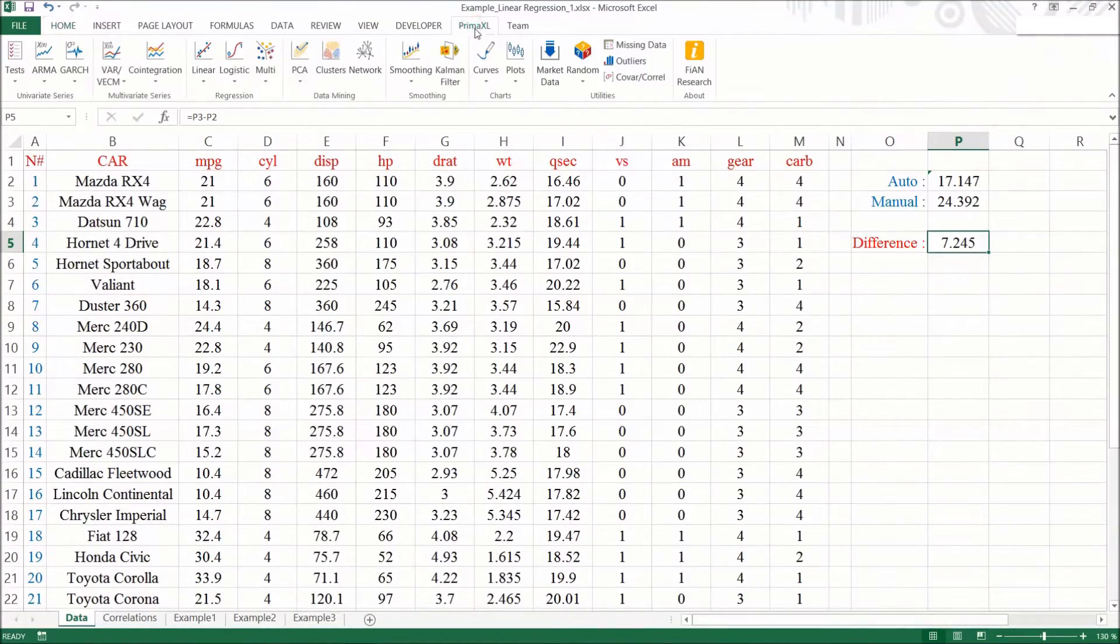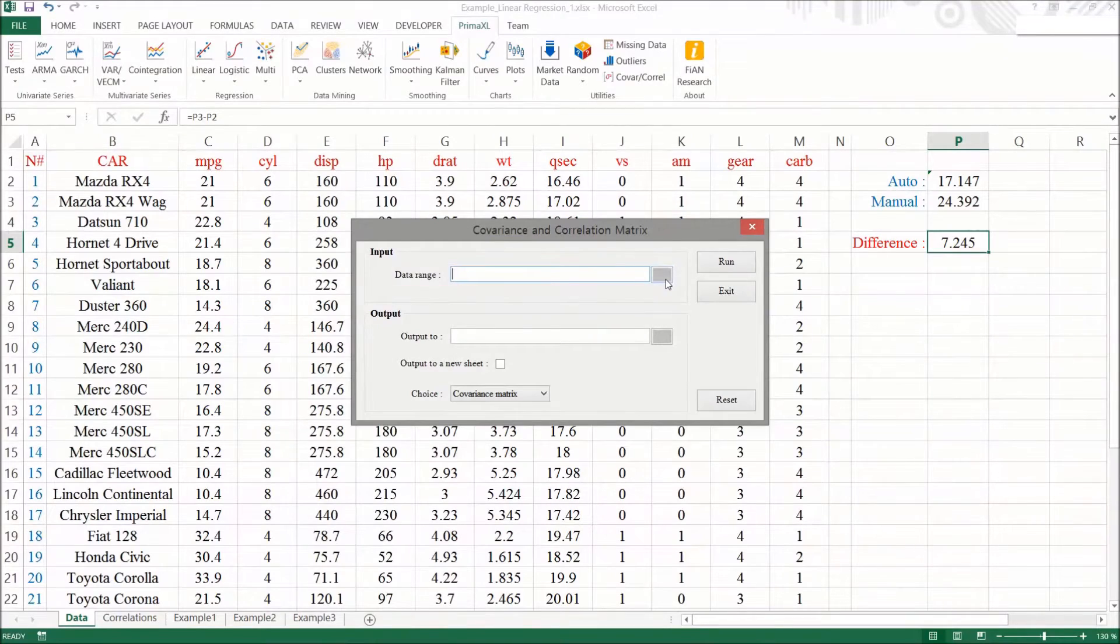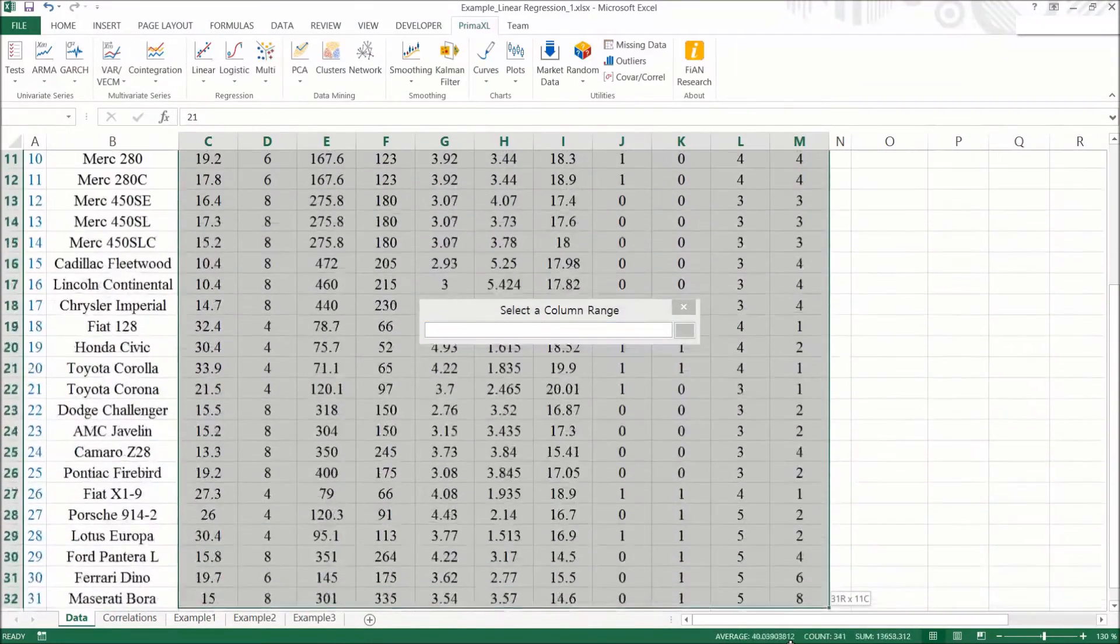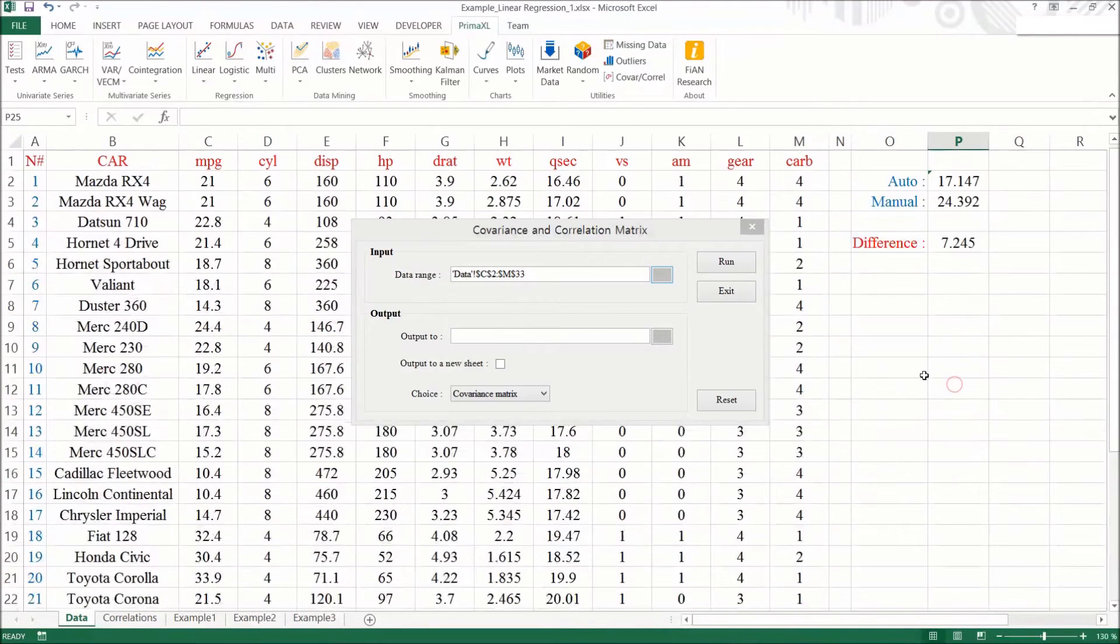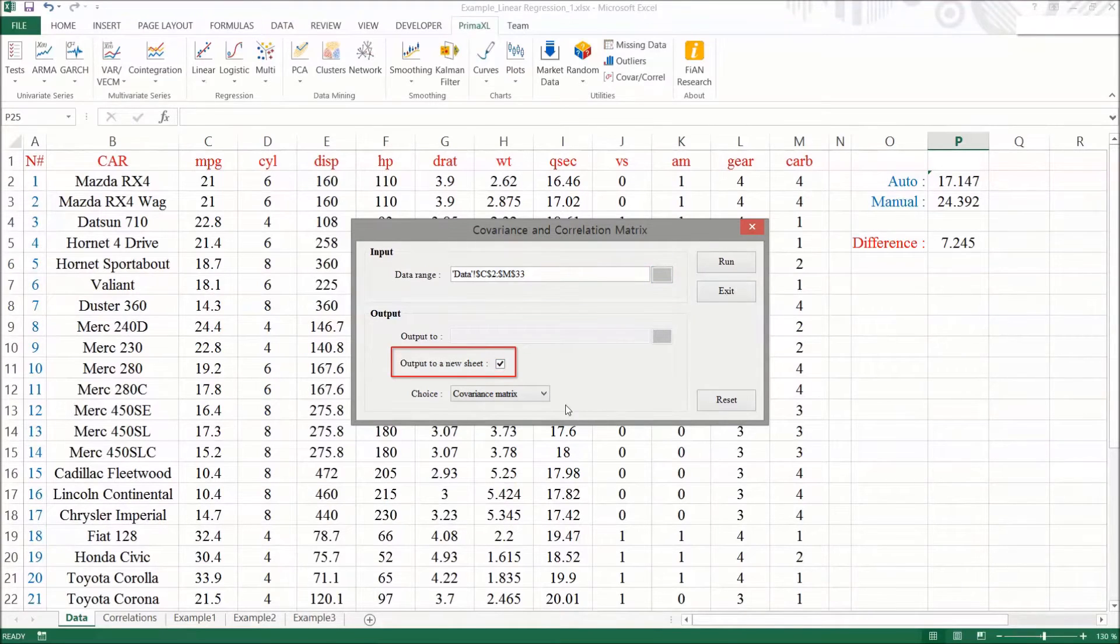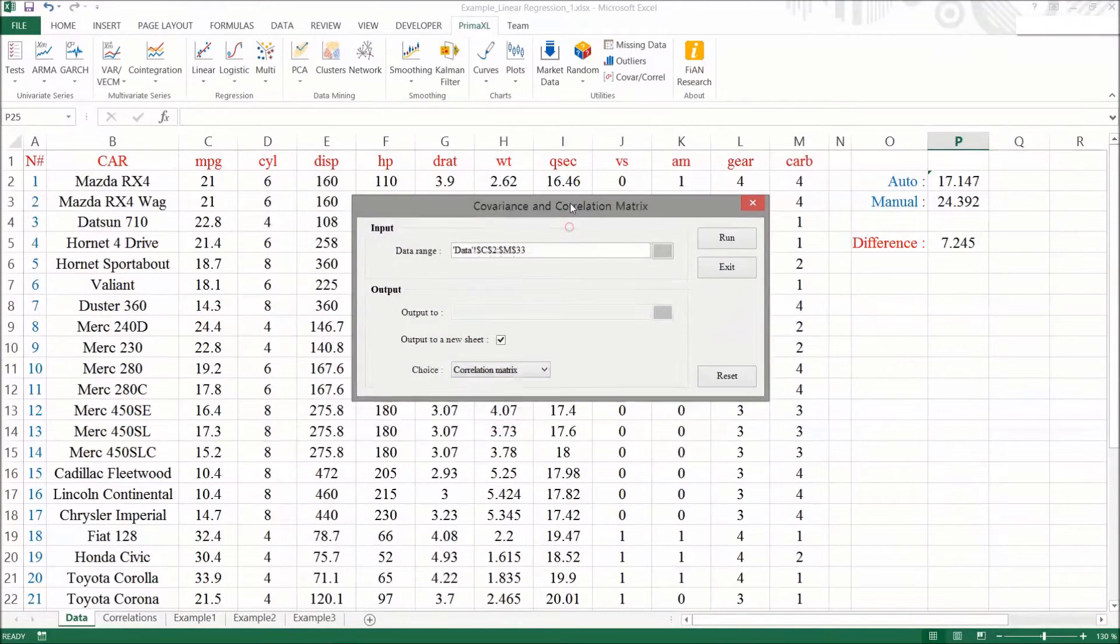The next simplest thing we can do with the data would be to calculate the correlation matrix. We go to the PremXL tab. Click on this small button that looks like the sigma square sandwiched in between the square brackets. Here, we specify the cell range of the data columns. We check on this box to stream the output to a new sheet. Then, we select the correlation matrix in the drop-down menu. Finally, we press the Run button to execute.